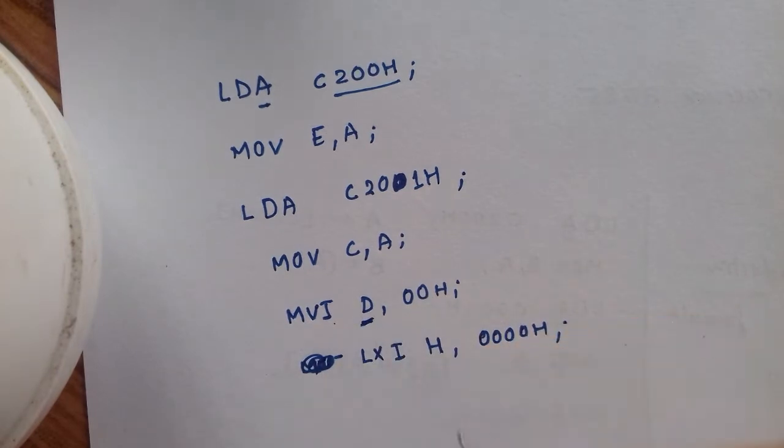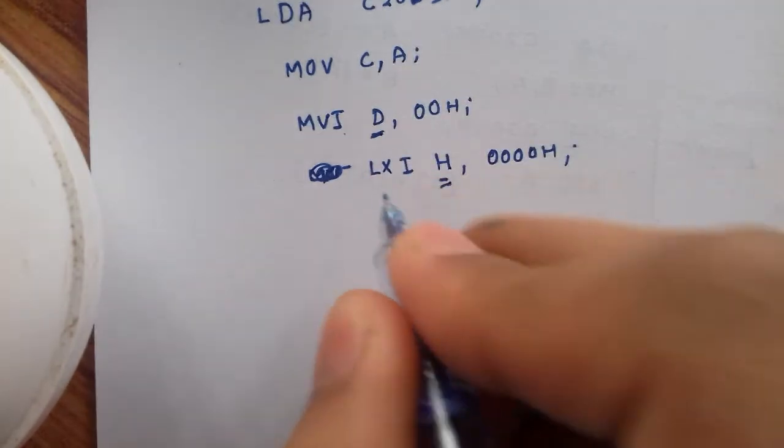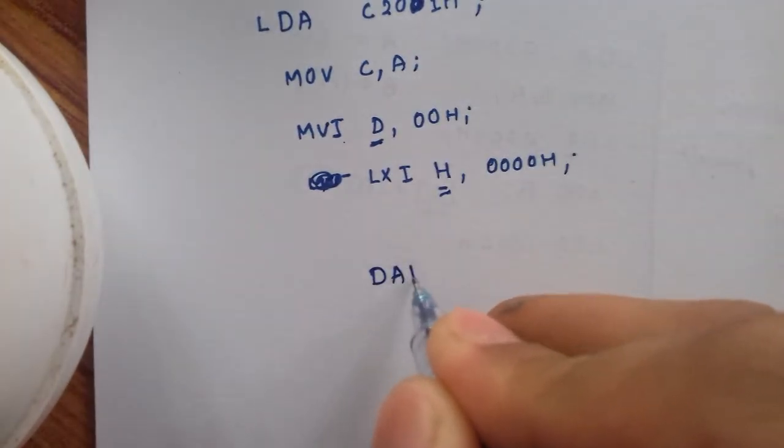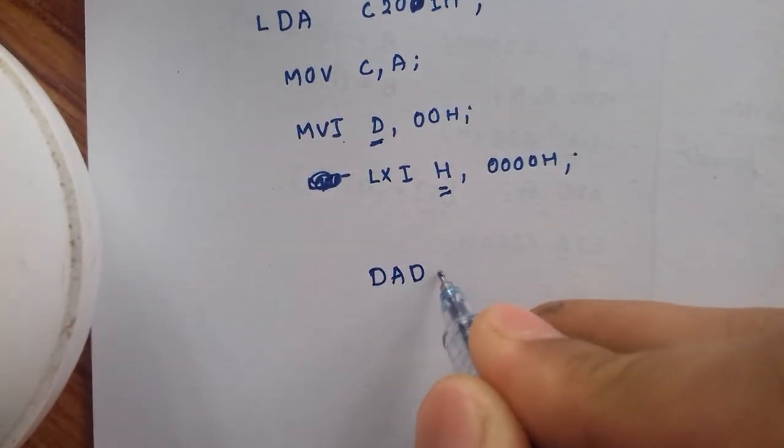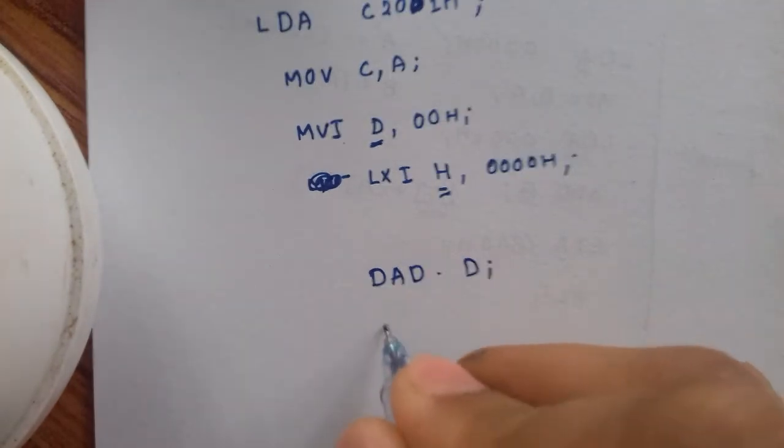Now we perform the multiplication. We will add the content of the HL pair with the DE pair, and we will decrement C.